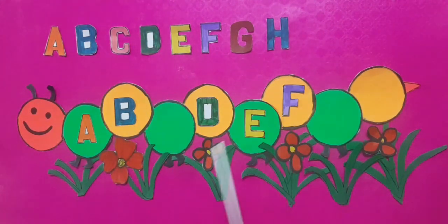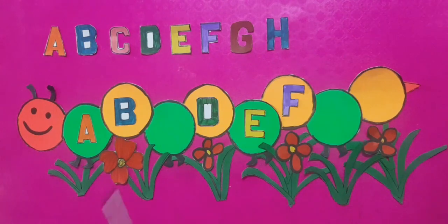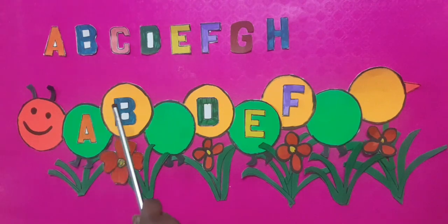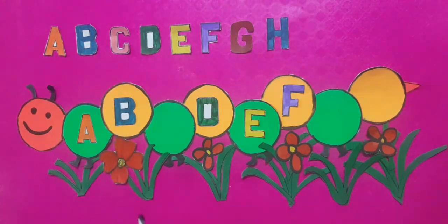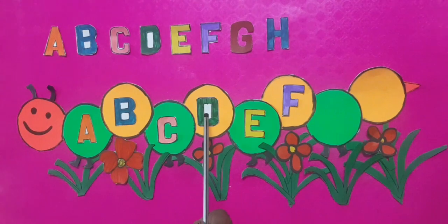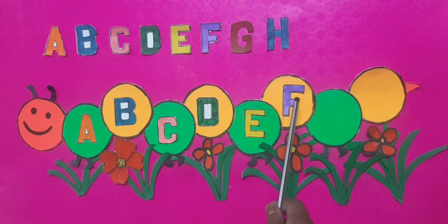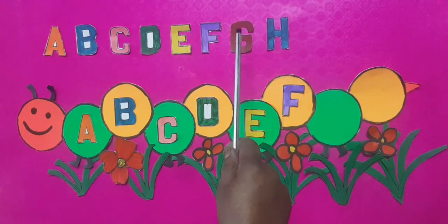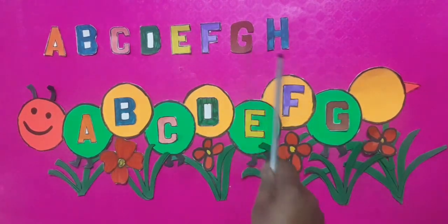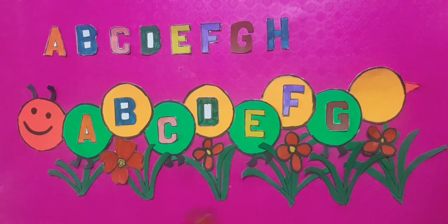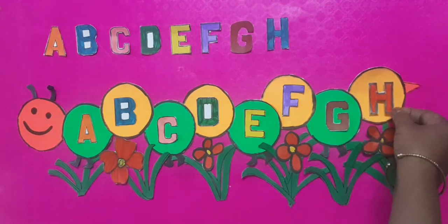You can see the blank boxes of the caterpillar's body. Now we will fill these blanks with letters: A, B. Tell me students, what comes after B? Yes, it's C. D, E, F. After F, what will be next? Yes, it's G. After G, what will be next? Yes, it's H.